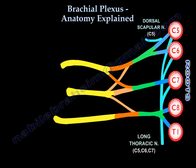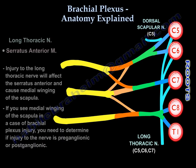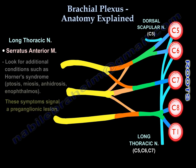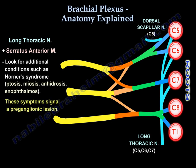From C5, C6, and C7 comes the long thoracic nerve, which supplies the serratus anterior. If the serratus anterior is affected, you get medial winging of the scapula. In a brachial plexus injury with medial winging, you need to determine if the lesion is preganglionic or postganglionic — look for Horner's syndrome: ptosis, miosis, anhydrosis, and enophthalmos.